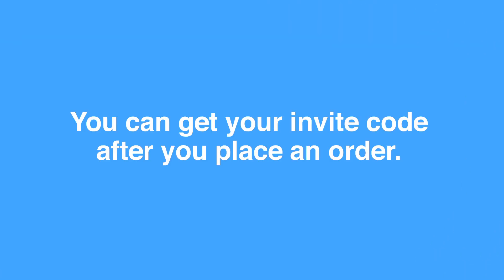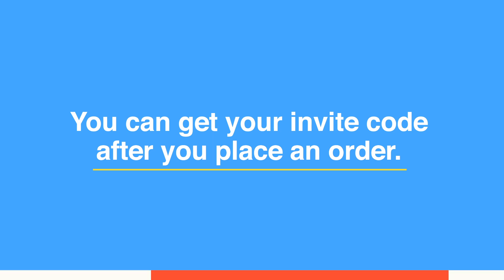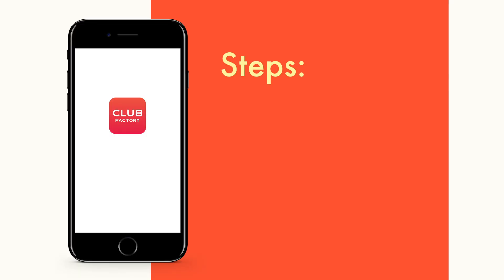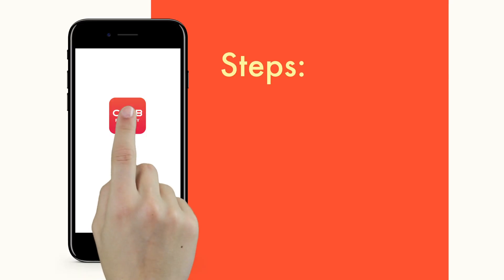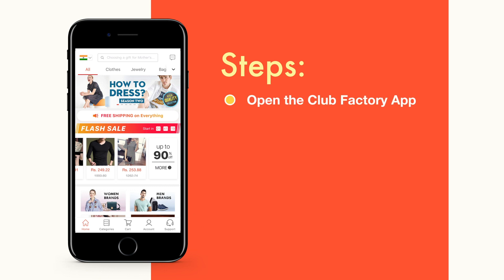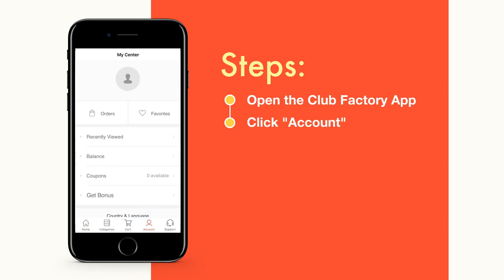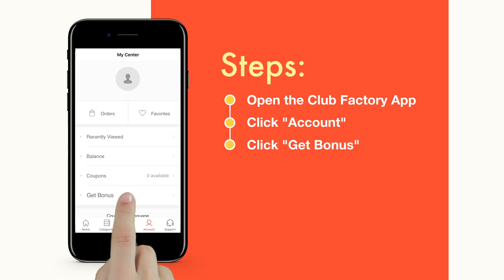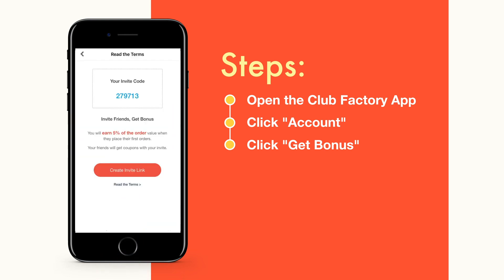Everyone can get an invite code, but you can only get it after placing at least one order with Club Factory. To retrieve your invite code, you open the app, click on the account button at the bottom of the screen, and then select 'get bonus.' Your invite code, which is a six-digit number, will be displayed on the screen.